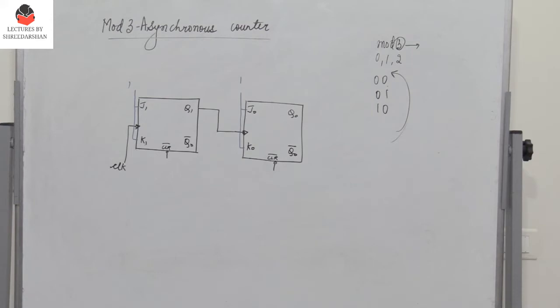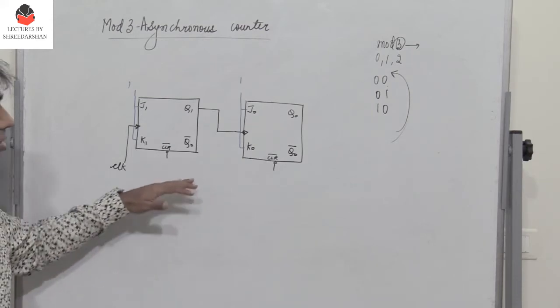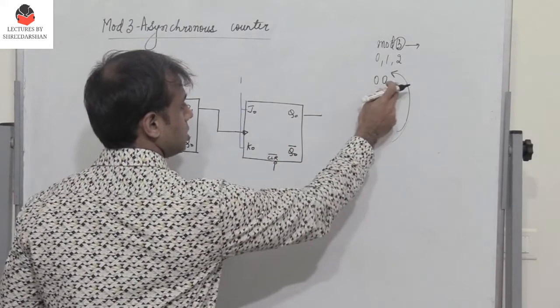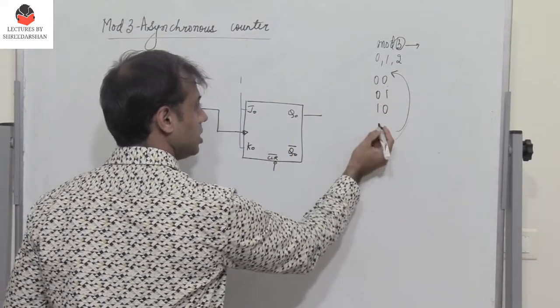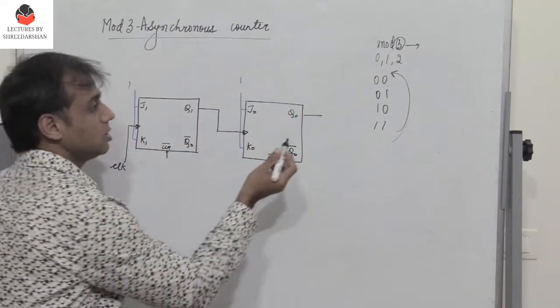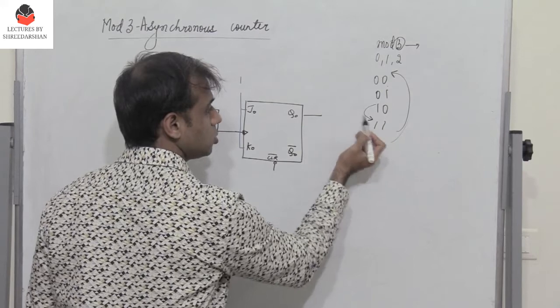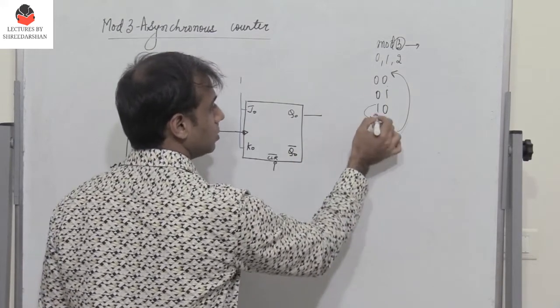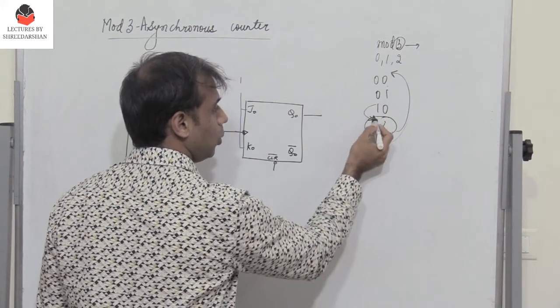If I have this circuit, initially I get 00, then 01, then 10, and then 11. But now what should happen after 10? When the state changes to 11, these two flip-flops should be cleared.